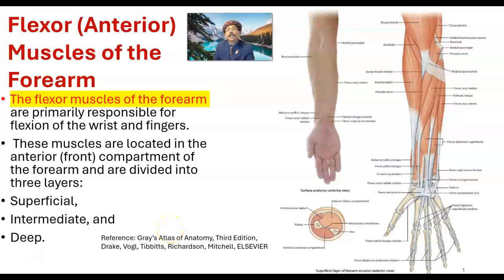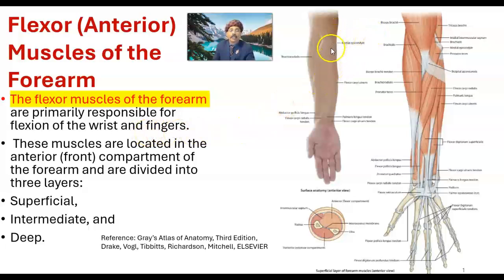Hello, my name is Dr. Diwan S. Raja. Today I will discuss about the gross anatomy of the flexor or anterior muscles of the forearm. The flexor muscles of the forearm are primarily responsible for flexion of the wrist and fingers. Some of them cross the elbow joint, so they also flex the elbow.